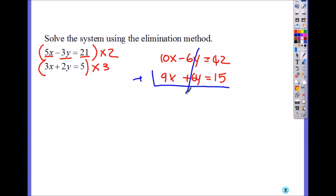You're trying to get rid of one of the variables. That's the elimination method. So 10x plus 9x is 19x which equals to, now add it again, 57. So now you divide by 19 and 19. So you get x equals to 3.